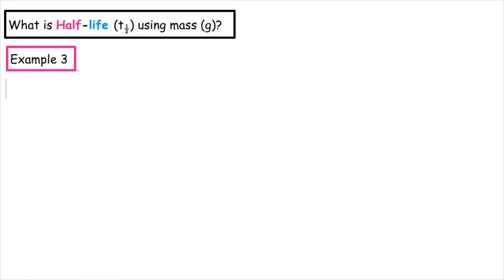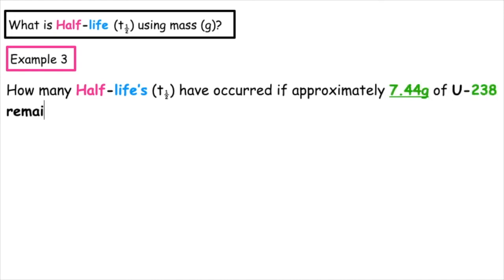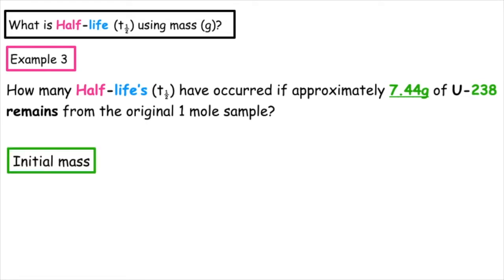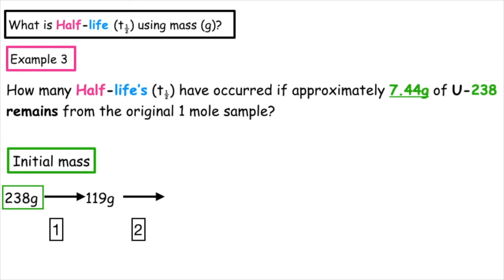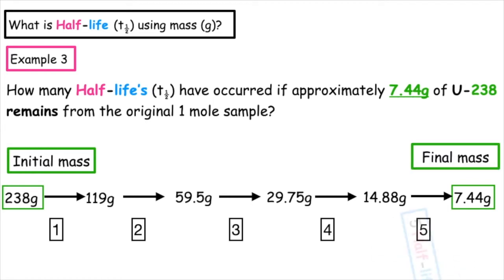Example three: how many half-lives have occurred if approximately 7.44 grams of uranium-238 remains from an original one mole sample? The original mass of uranium is 238 grams. After one half-life: 119 grams. After a second: 59.5 grams. A third: 29.75 grams. A fourth: 14.88 grams. And a fifth half-life gives us 7.44 grams, which matches the value given in the question.